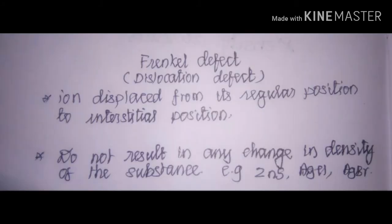The Frenkel defect is mainly due to the displacement of an ion from its position to an interstitial position. The ion usually displaced is a cation, since cations have smaller size and anions are larger. Because of the small size of the cation, they are dislocated to the interstitial position. Since the ions move to the interstitial position, there is no change in the density of the crystal.